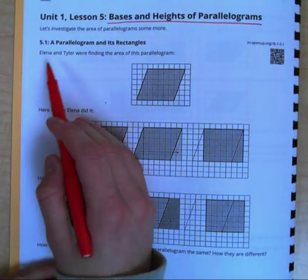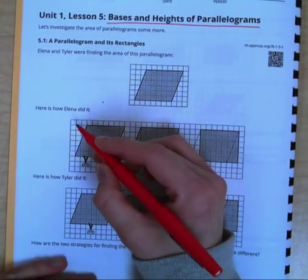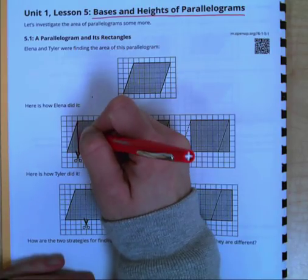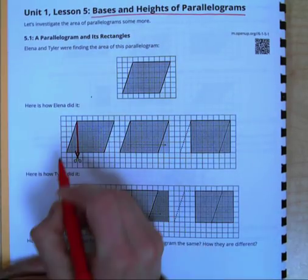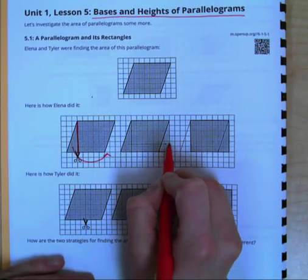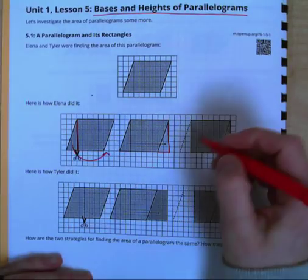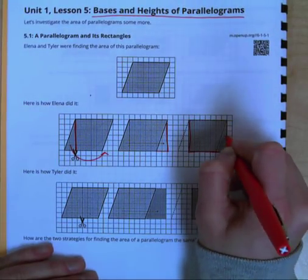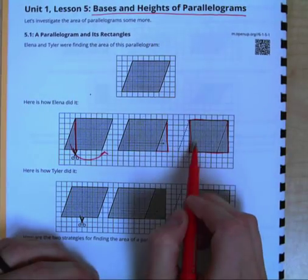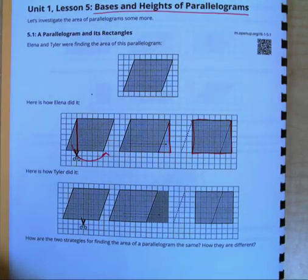So we have Elena and Tyler, and they were both trying to find the area of this parallelogram right here. Elena took her scissors and she decomposed her shape right here, and she took it and she moved it over here to add it on to the other side, so that instead of a parallelogram, she had a rectangle or square here. One, two, three, four, five, six by one, two, three, four, five, six. So she has a rectangle that is six by seven.